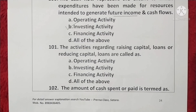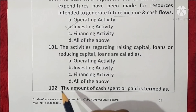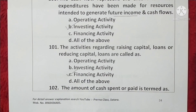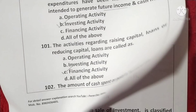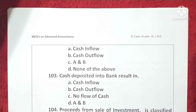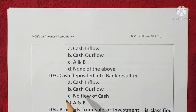Question 101. The activities regarding raising capital, loans, or reducing capital or loans are called financing activities. Option C is correct. Question 102. The amount of cash spent or paid is termed as cash outflow. Option B is correct.